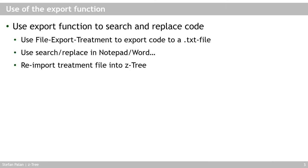You can use the export function to export your entire SETTRI treatment into a text file. One use for this is to replace code throughout your entire experiment — for example, renaming a variable — by exporting the code, using the search-and-replace function in Notepad or your editor of choice, and then re-importing the treatment file into SETTRI. This way you can be sure you found every instance of that variable name in the entire code.